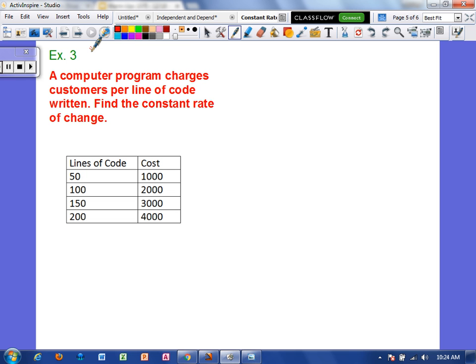Alright, example 3. A computer program charges customers per line of code written. Find the constant rate of change. Okay, so there are lines of code and then there's a total cost. And remember that total cost is always dependent. And then the lines of code would have to be independent. Independent is represented with x. Dependent is represented with y.